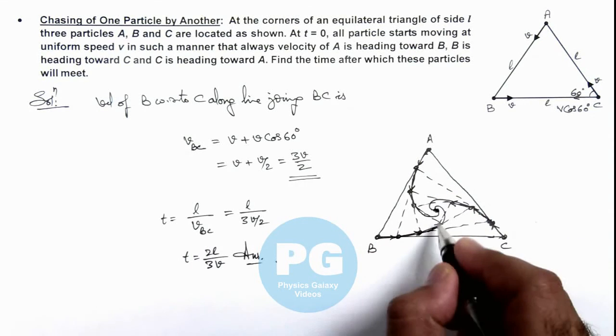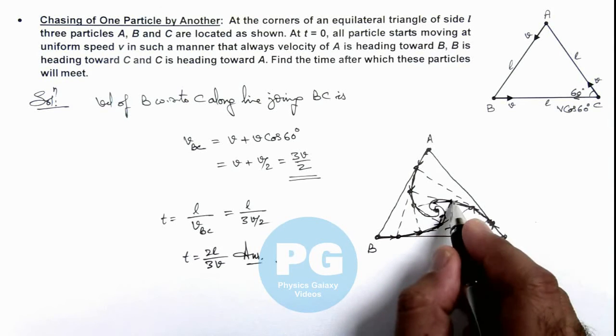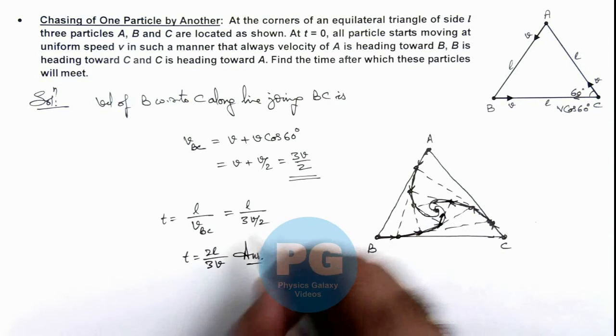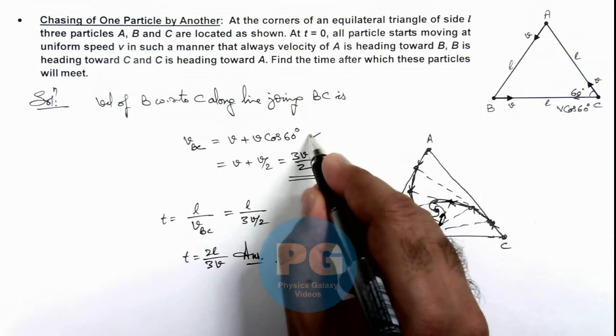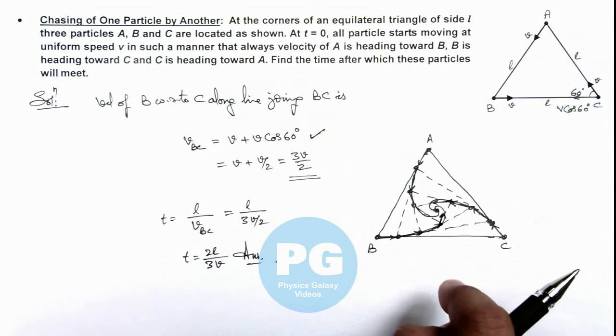But at any instant, for particle B, as it is moving toward particle C and C is moving toward A, so the relative velocity of particle with respect to the neighboring particle will always remain v plus v cos 60 degree. That's why this relative speed can be considered till the particles are going to meet.